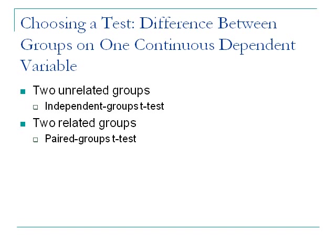Paired groups design also applies if you're comparing people from one group to another who are related in some way — like twins — or any within-subjects design where somebody receives all levels of the independent variable. Again, pretty easy to interpret.